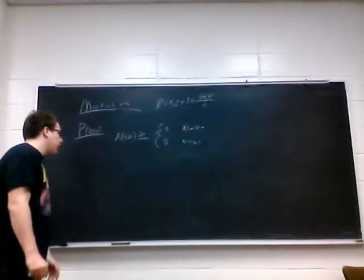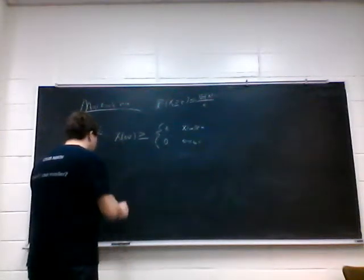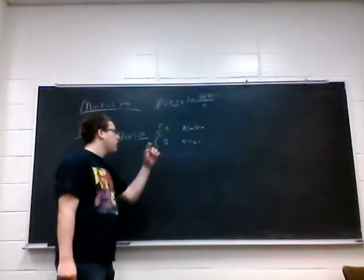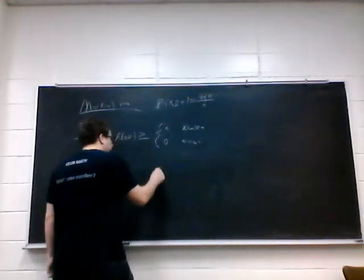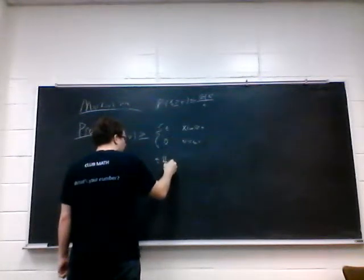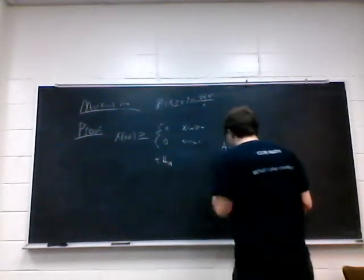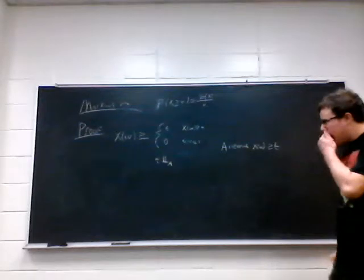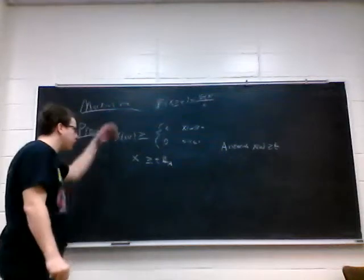We are then going to use an indicator function. So that means we're going to indicate whether X of omega is greater than or equal to t. On this side it just becomes t times the indicator function of A, where A is the event that X of omega is greater than or equal to t. Because we can just pull a t out from there and then we get an indicator function. So, we get that this is greater than or equal to X because we do this for all omega.